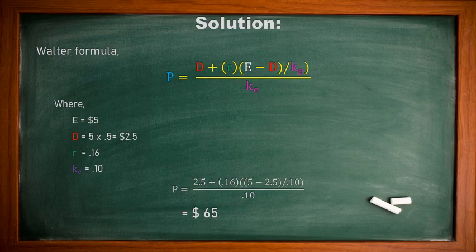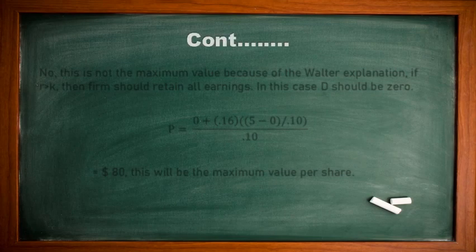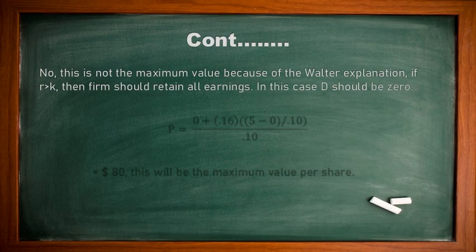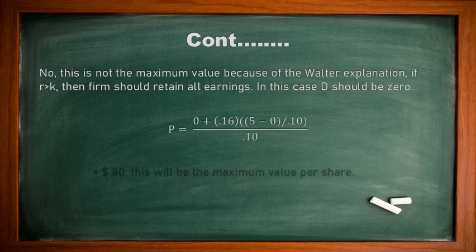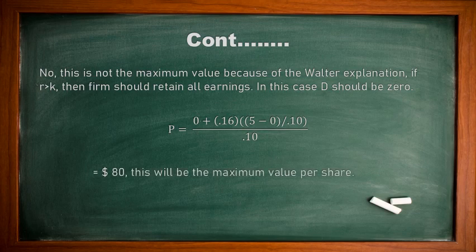Is $1.65 the maximum value? No — because Walter's explanation states that if R is greater than K, the firm should retain all earnings. Therefore D should be 0. Driving the Walter formula again with D = 0 gives a final price of $1.80 per share. So $1.80 is the maximum value of the share.